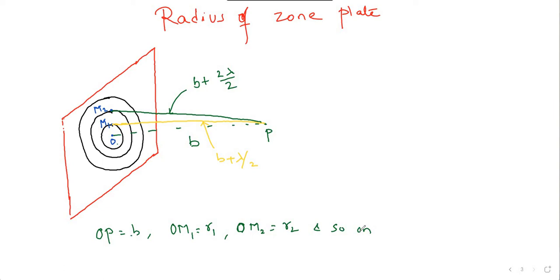And M1P, you see from the figure, M1P is equal to B plus lambda by 2. And if there is M3, then M3P is equal to thrice of lambda by 2, and so on. Now, what we will do is we will calculate the area of the zones. What is the area of the zone OM1? What is the area of the zone OM2?